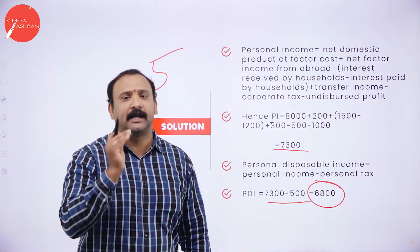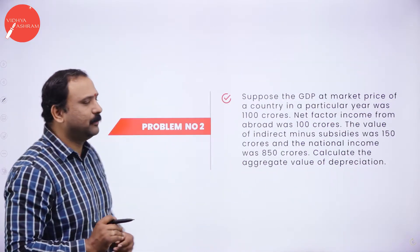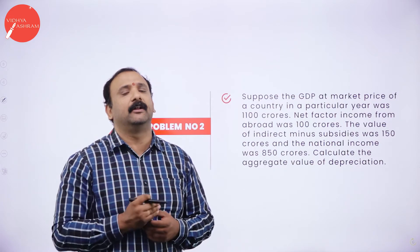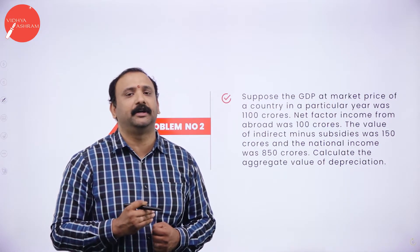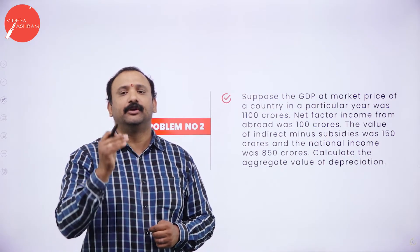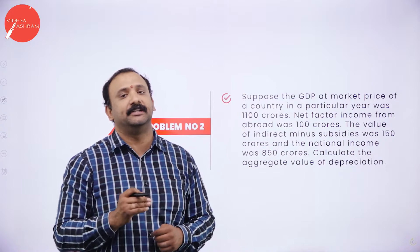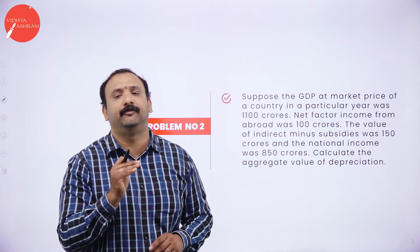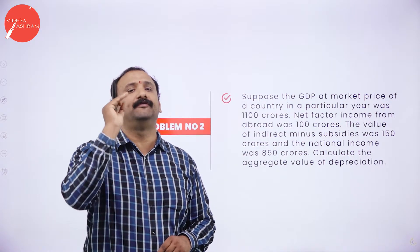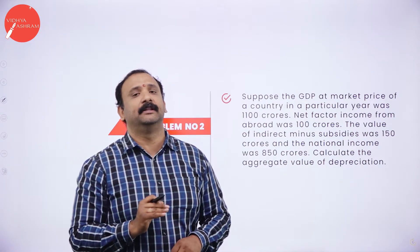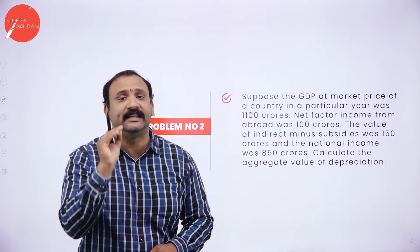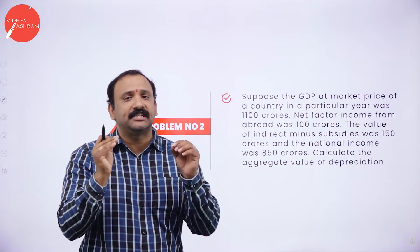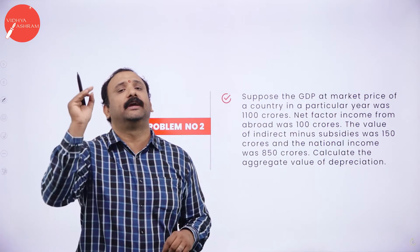Moving forward, let's look at the second problem. Suppose the GDP at market price of a country in a particular year is given as 1,100 crores. Net factor income from abroad was 100 crores. The value of indirect taxes minus subsidies was 150 crores, and national income was 850 crores. Calculate the aggregate value of depreciation. All the factors are already given — we just have to reassemble the formula to get the answer.